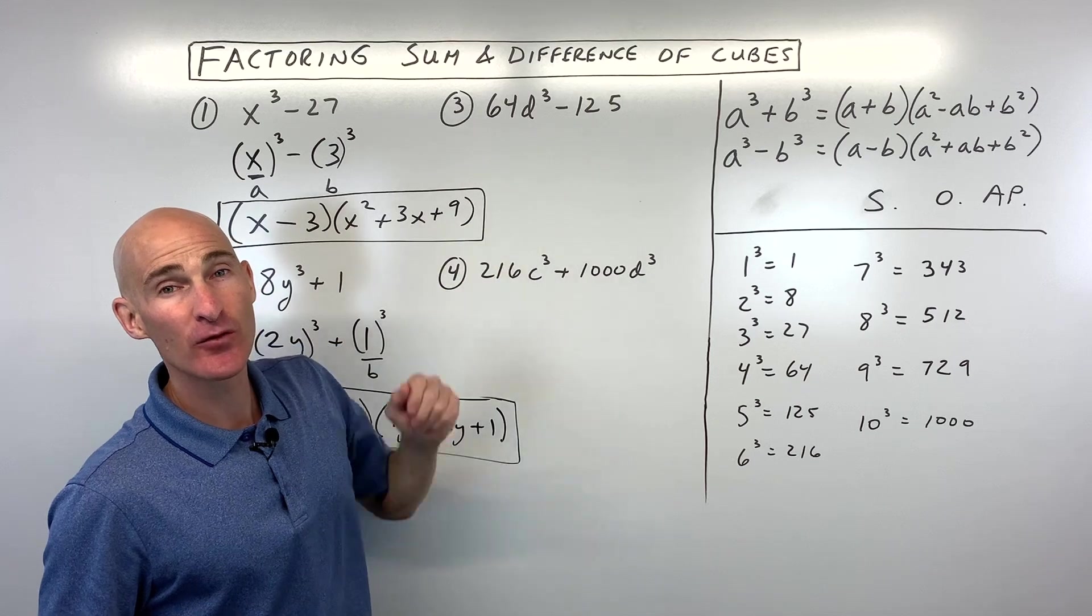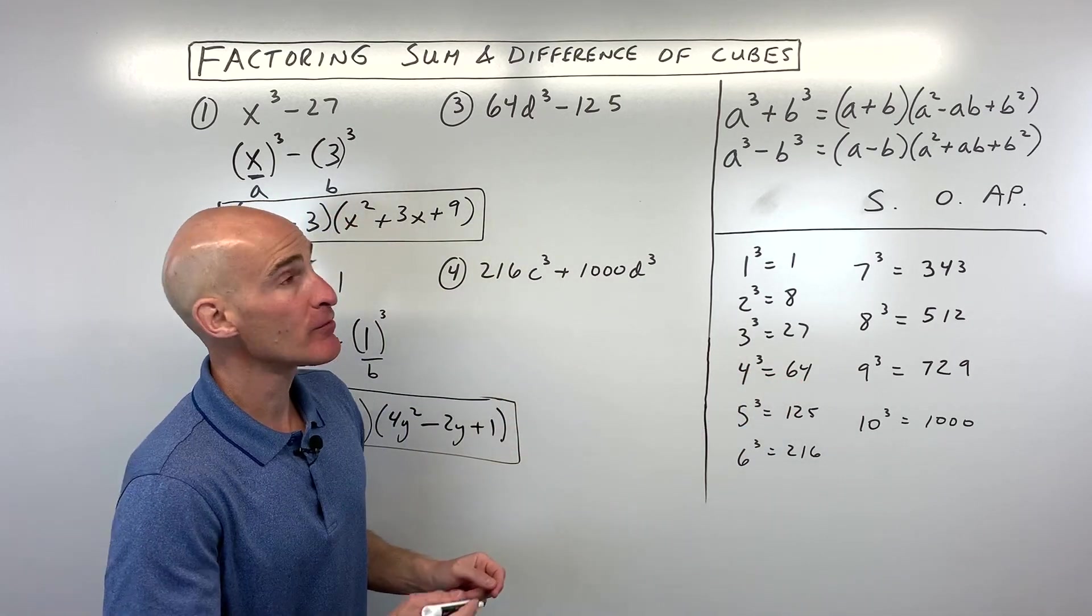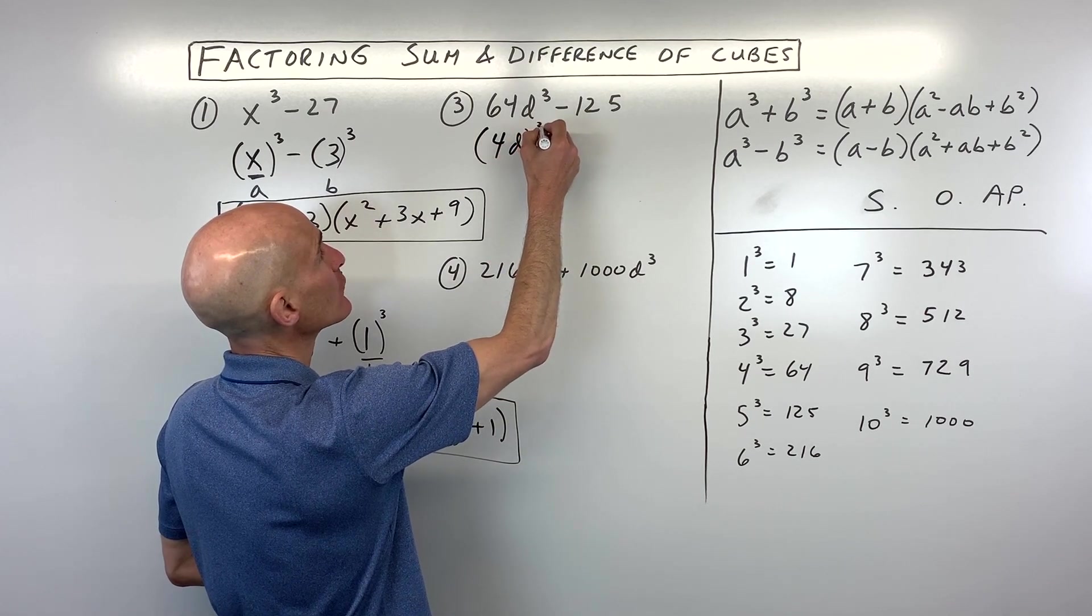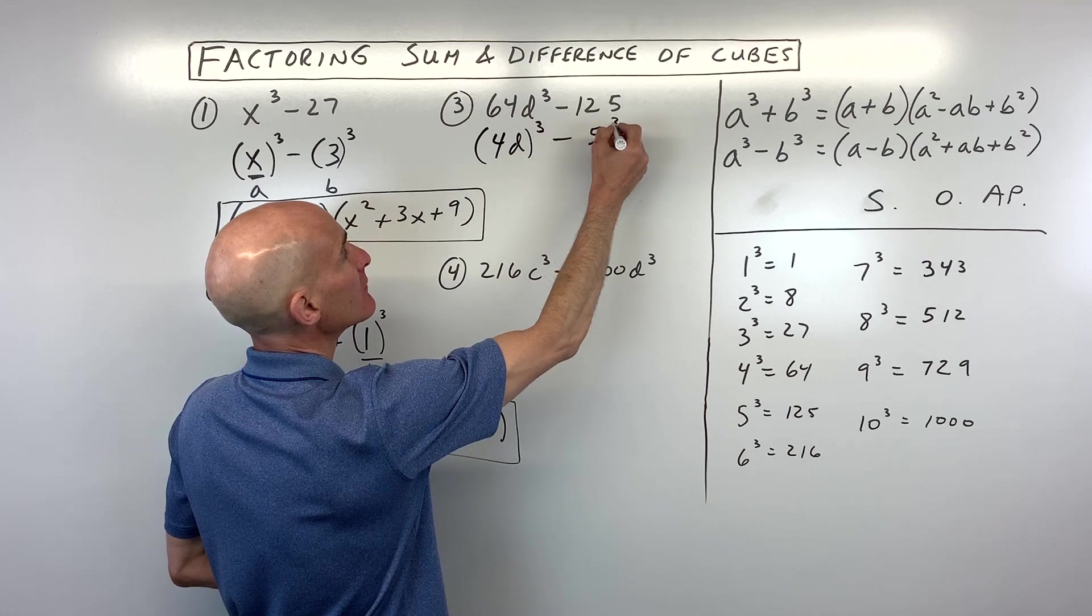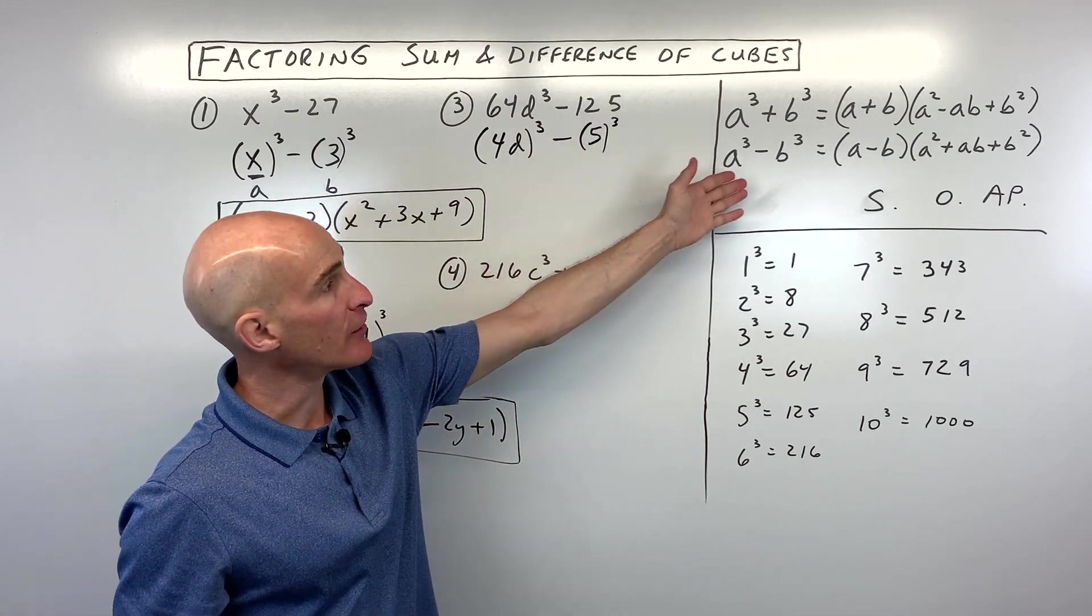What times itself is 64d³? Well, you can see 64 is 4 to the third power. So this is really going to be 4d times 4d times 4d, or 4d cubed. 125 is 5³. And so now this is going to be our a and our b in our formula.